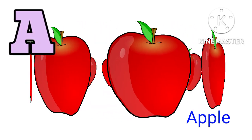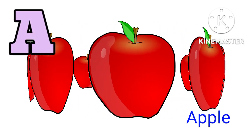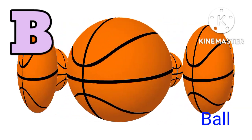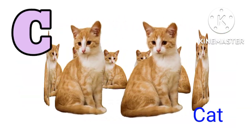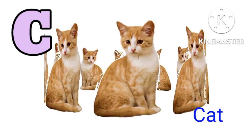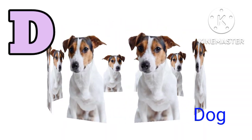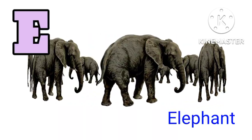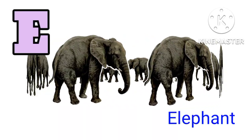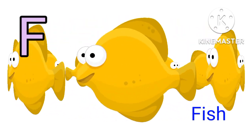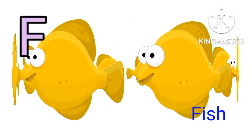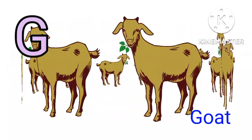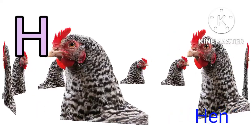A for Apple. B for Ball. C for Cat. D for Dog. E for Elephant. F for Fish. G for Goat. H for Hen.